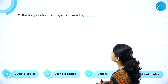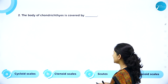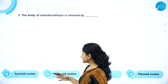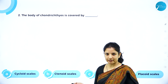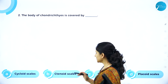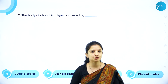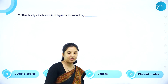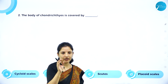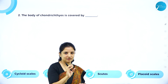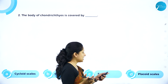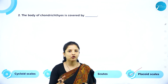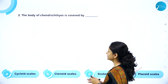MCQ: The body of Chondrichthyes is covered by — cycloid scales, ctenoid scales, scutes, or placoid scales? Cycloid and ctenoid scales are present in Osteichthyes. Scutes are present in reptiles — they have a cornified, dried, hard skin called scutes. Therefore, option D, placoid scales, is the right answer.